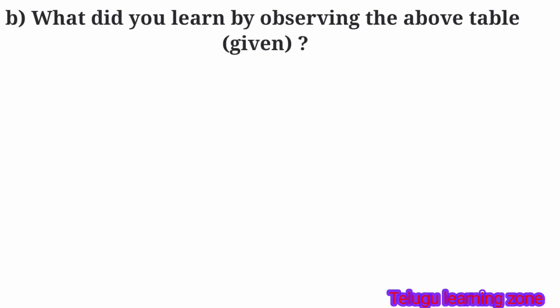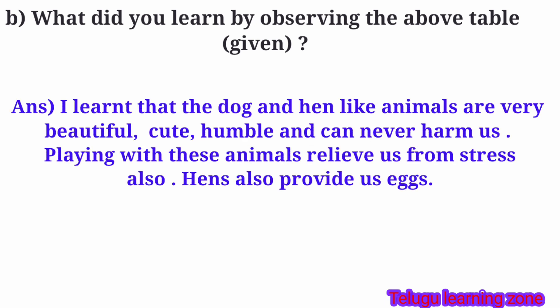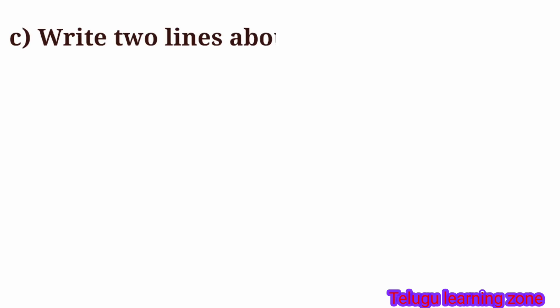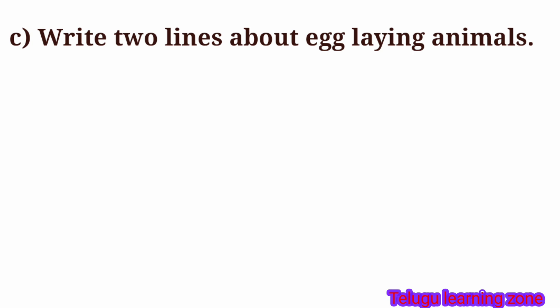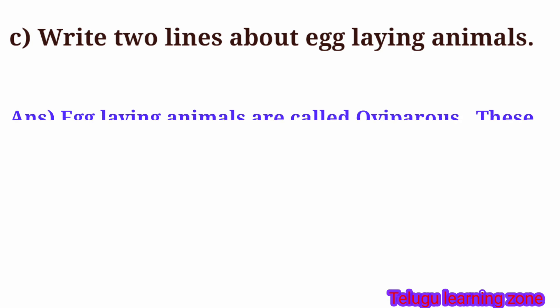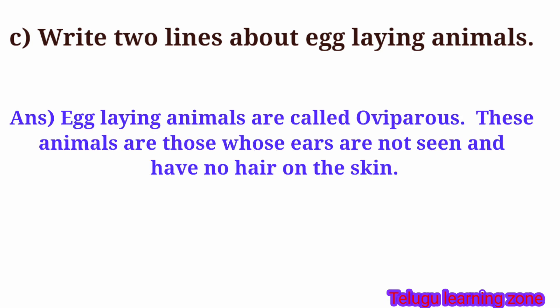Question B: What did you learn by observing the above table? Answer: I learned that dog and hen-like animals are very beautiful, cute, humble and can never harm us. Playing with these animals relieves us from stress also. They also provide us eggs. Question C: Write two lines about egg-laying animals. Answer: Egg-laying animals are called oviparous. These animals are those whose ears are not seen and they have no hair on the skin.